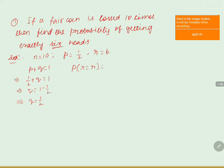The formula is: P(X = r) = nCr × q^(n−r) × p^r. According to the problem, r = 6, n = 10, q = 1/2, and p = 1/2. We'll substitute all these values. P(X = 6) = 10C6 × q^(n−r) × p^r.